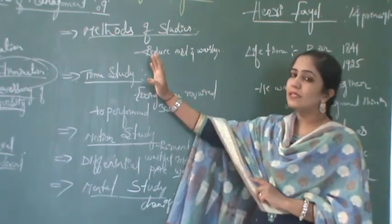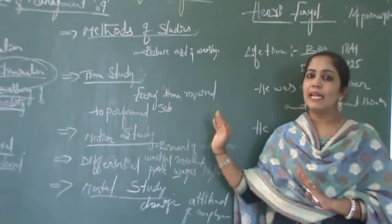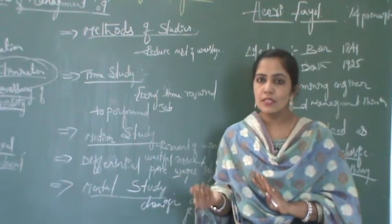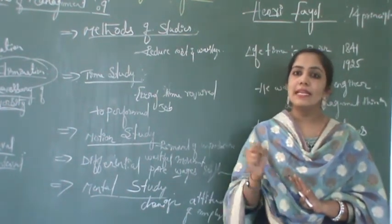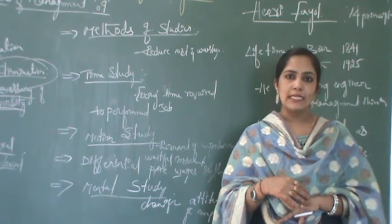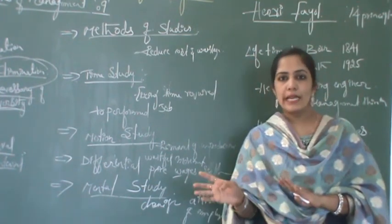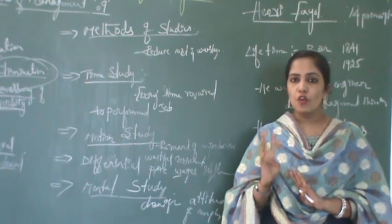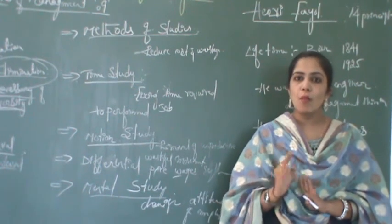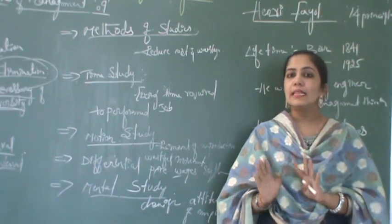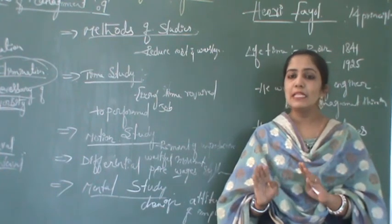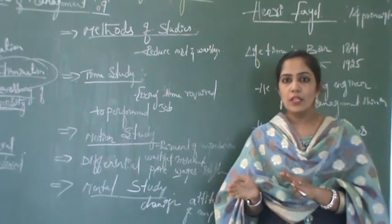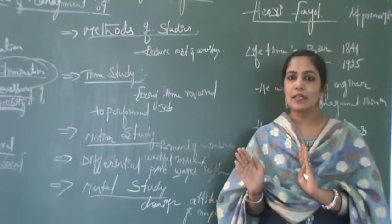These nine techniques provided by Taylor are meant to increase organizational efficiency systematically — to increase production and efficiency. To summarize: F.W. Taylor provided four principles and nine techniques. The scientific principle is purely based on the production level of the organization, and is based on truth, facts, and figures.